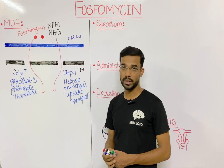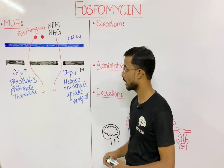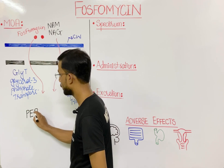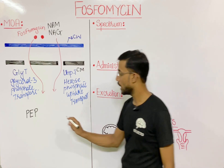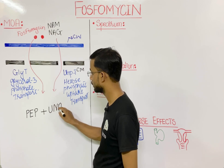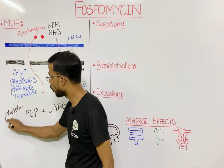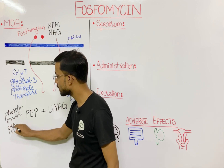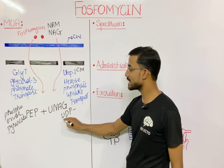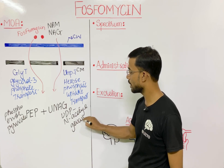Now let's see how N-acetyl muramic acid is synthesized in the bacteria. First, PEP — phosphoenolpyruvate — will react with UDP-N-acetylglucosamine to initiate the synthesis pathway.